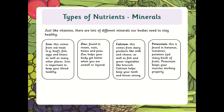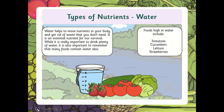Potassium is found in bananas, tomatoes, potatoes, and many kinds of fruits. Potassium keeps your muscles working properly. There are lots of different jobs here — it's really important that we have a good variety in our diets.